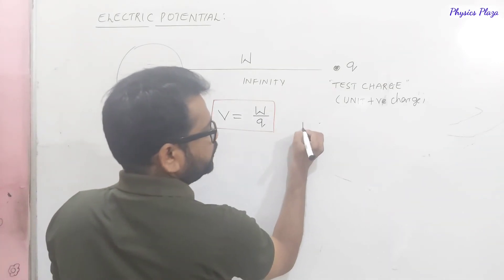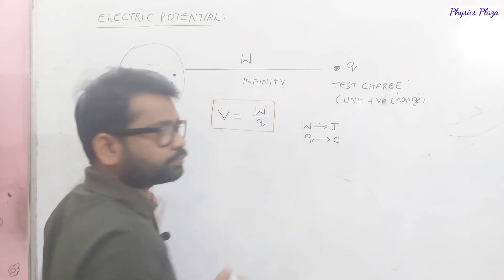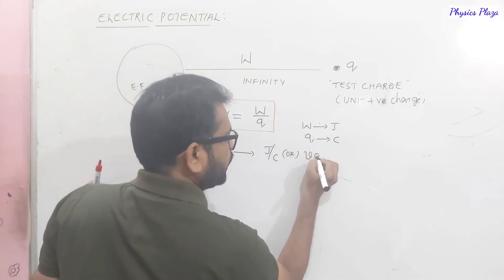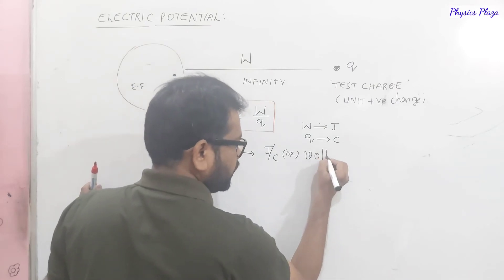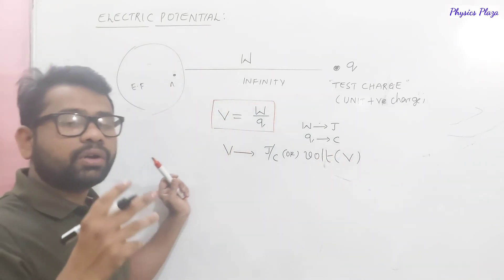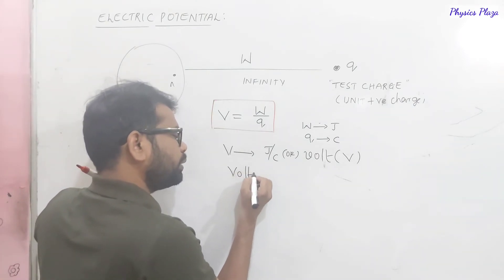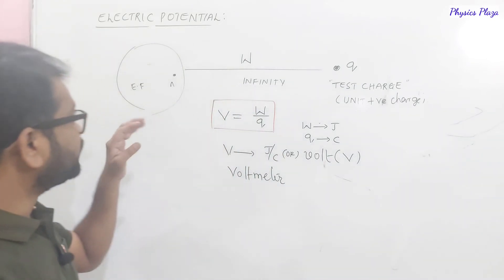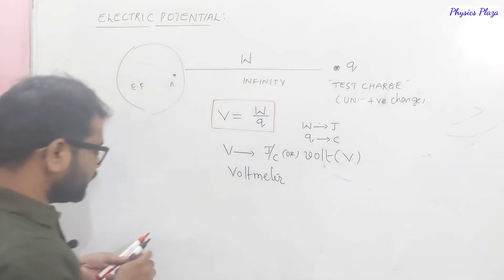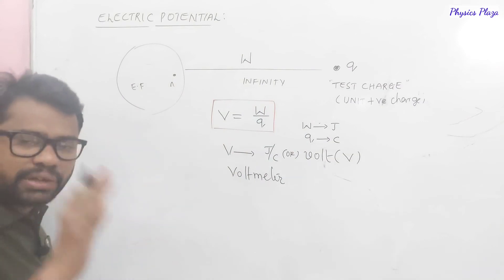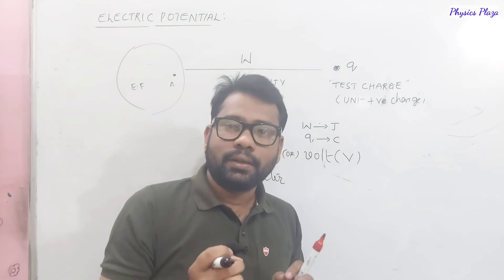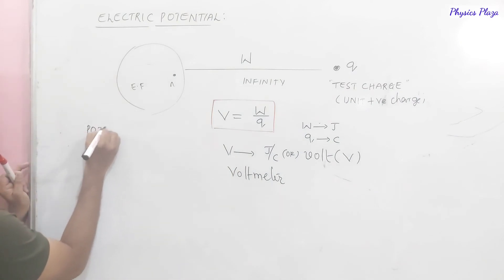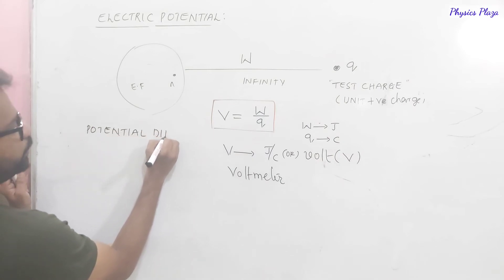We do not talk much about potential itself — we talk about potential difference. There will be current only when there is a potential difference. Potential difference: if VA is the potential at point A and VB at point B, the work done to move unit positive charge from A to B is the potential difference. Mathematically, VA − VB = W/Q.